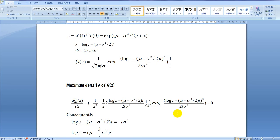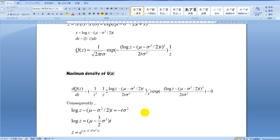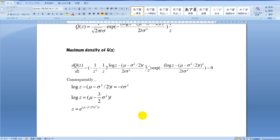As for the maximum density, we differentiate the q(z). And we get the maximum density point z like this.